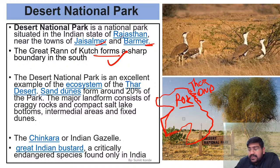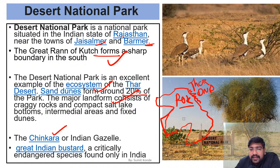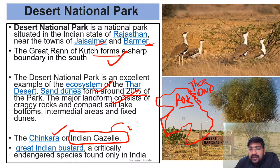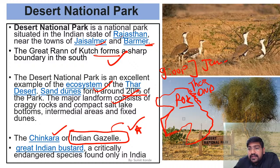The ecosystem of Desert National Park has about 20% sandy part with sand dunes, and the rest is arid and semi-arid regions with salt lakes. The most important species here is Chinkara, also known as Indian Gazelle. During lockdown, there was news about increased poaching of Chinkara here. This was covered in The Hindu and discussed in the January 2021 current affairs session.